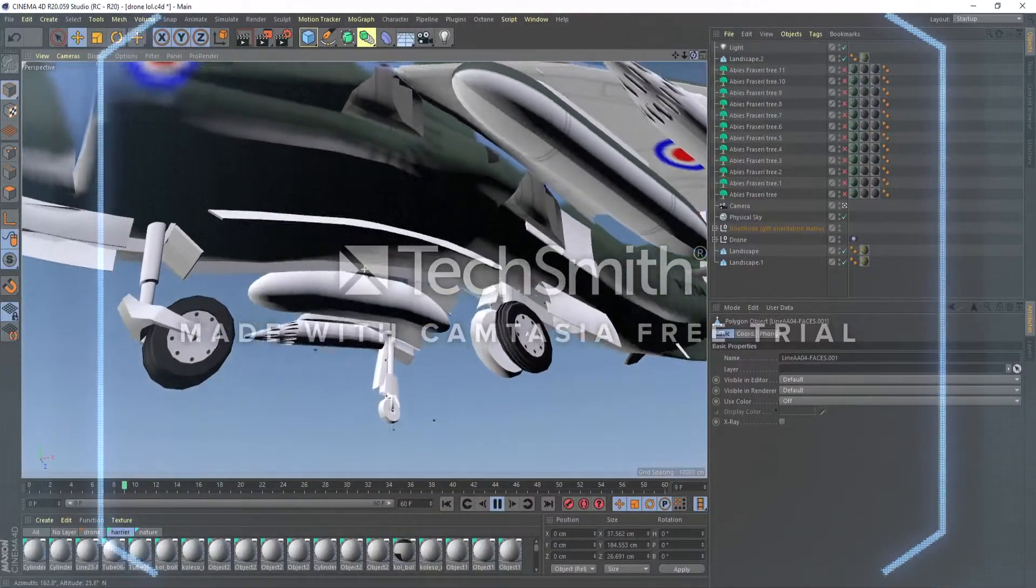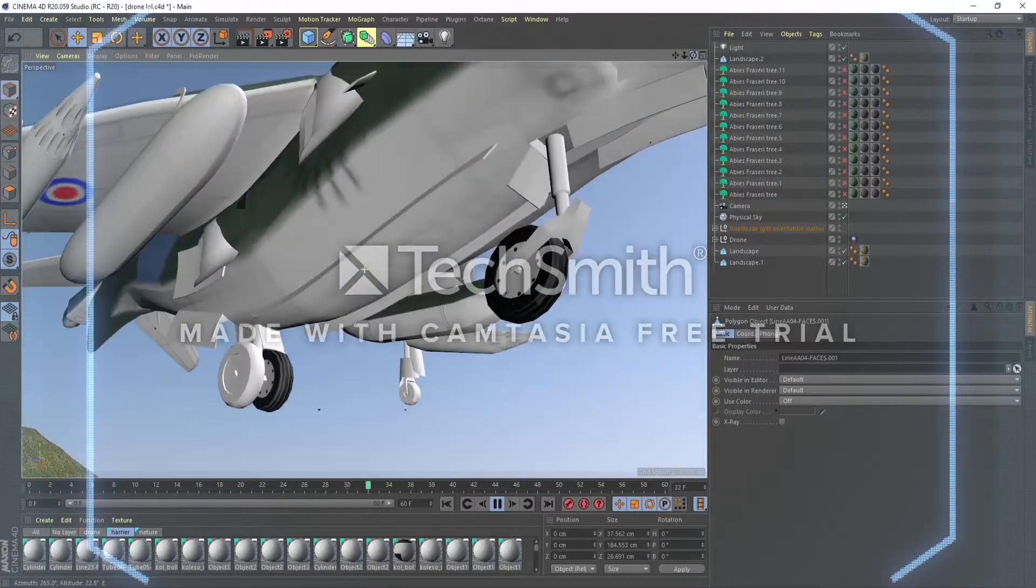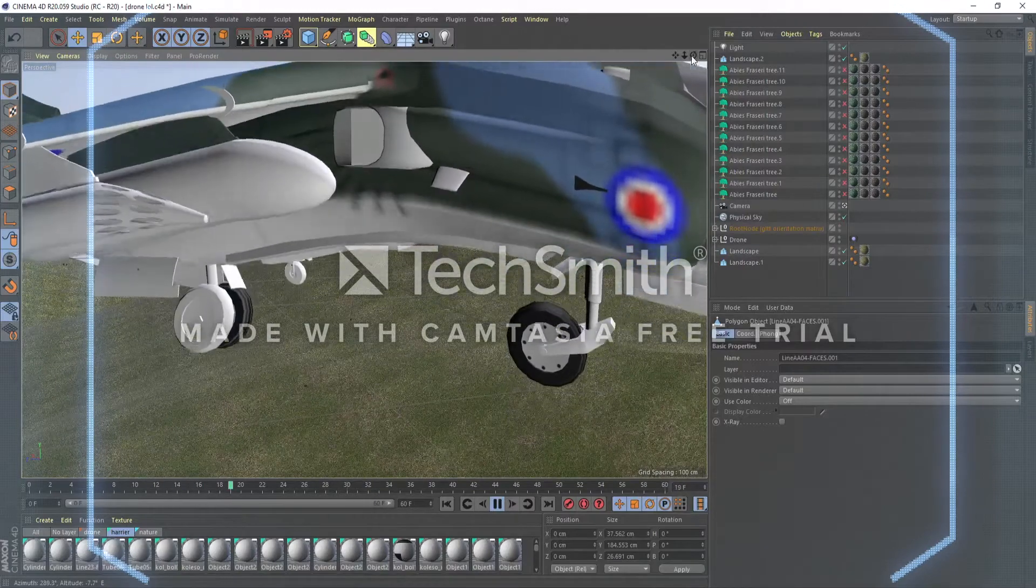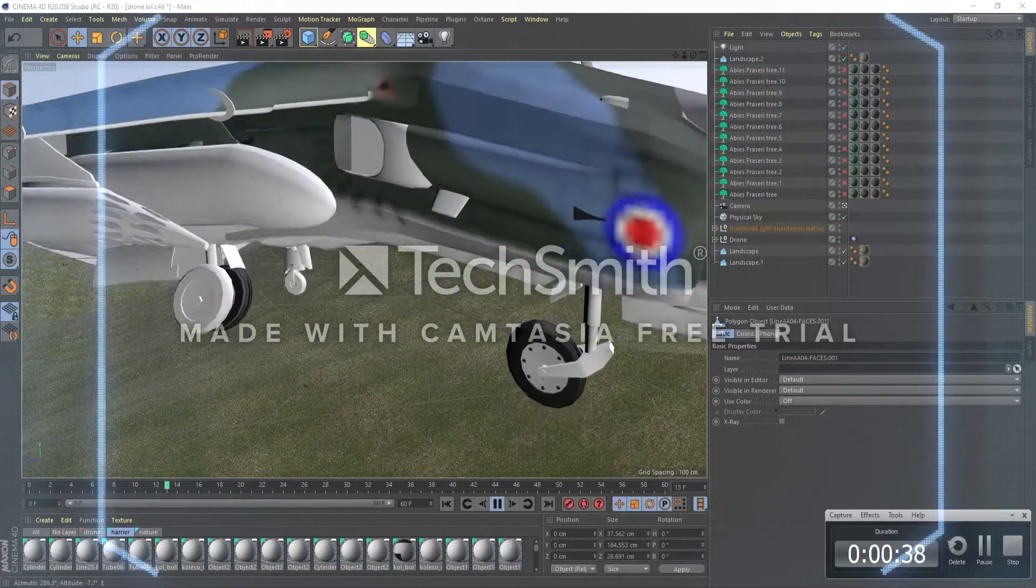As part of its vertical takeoff and landing capabilities, it has two nozzles on each side that direct the thrust from the Pegasus engine towards the ground. This design was revolutionary at the time but it did have some drawbacks.